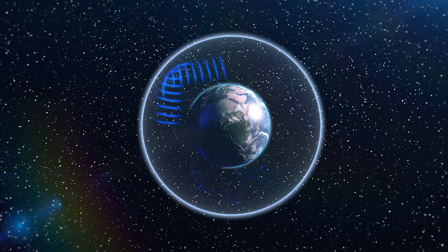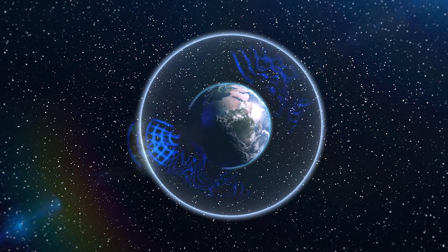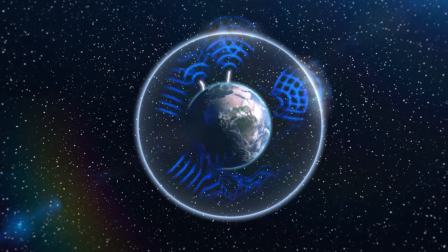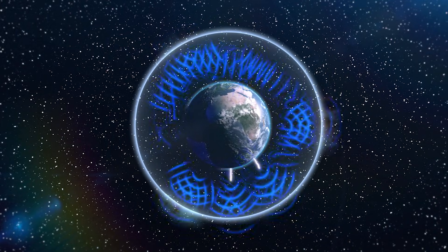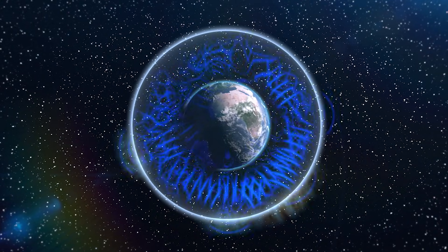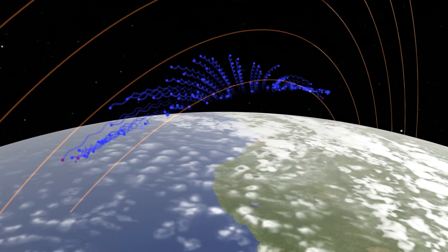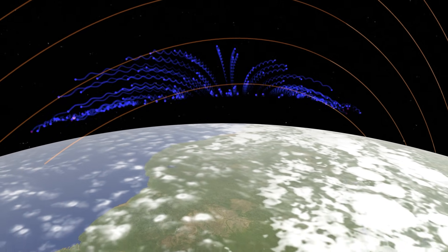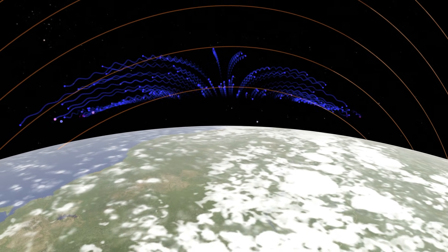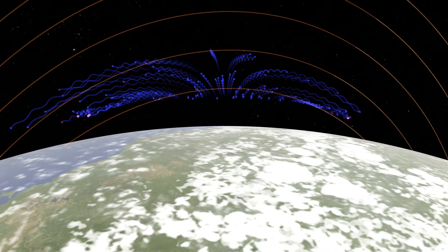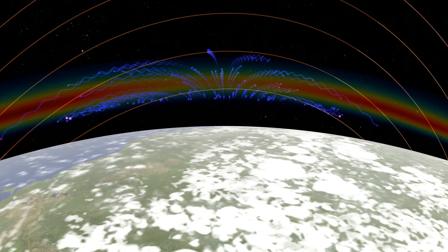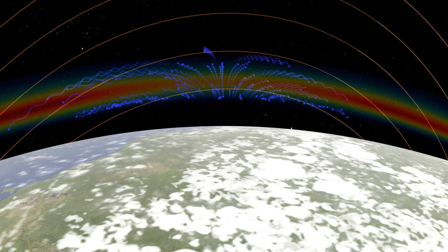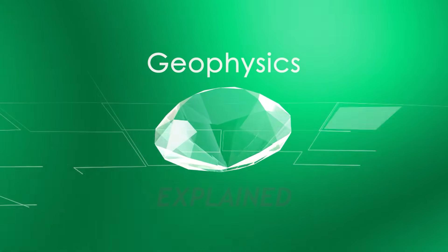Considered by many to be the heartbeat of our planet, the Schumann Resonance was only first mathematically predicted in 1952 by physicist Winifred Otto Schumann. To understand what the Schumann Resonance is and how it is produced requires an awareness and understanding of some of the largest physical Earth systems and therefore provides a neat path into understanding atmospheric macrogeophysics. I'm your host Stefan and welcome to Geophysics Explained.